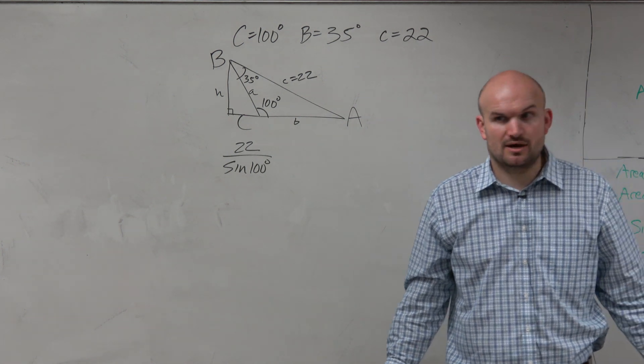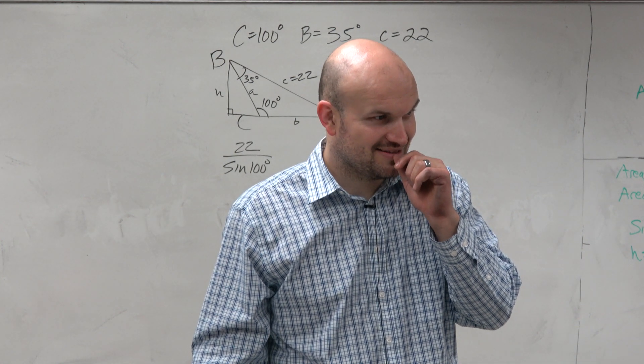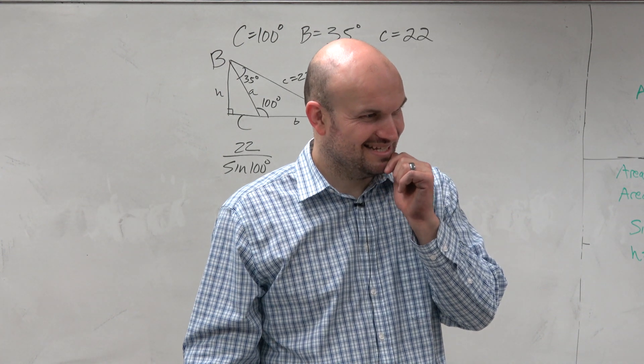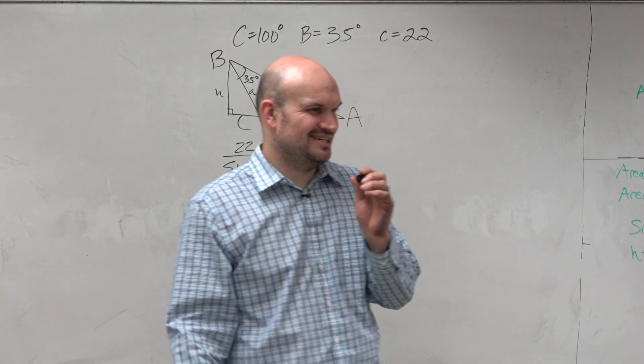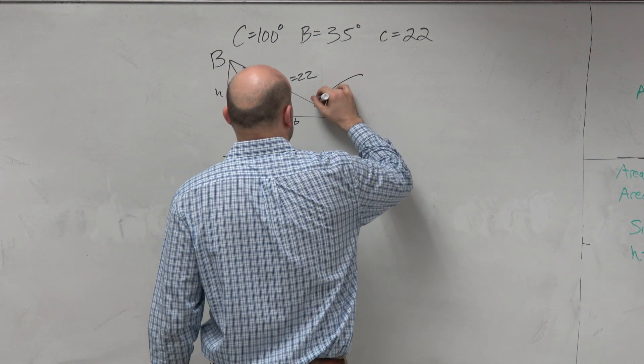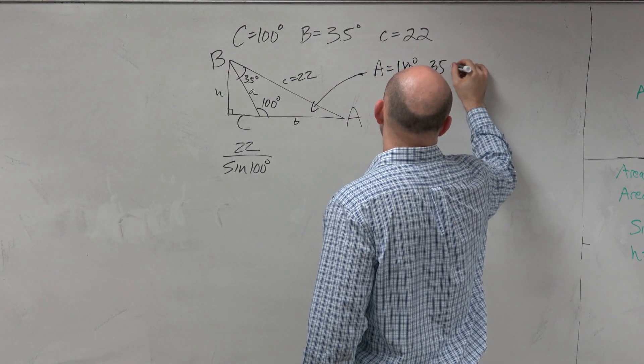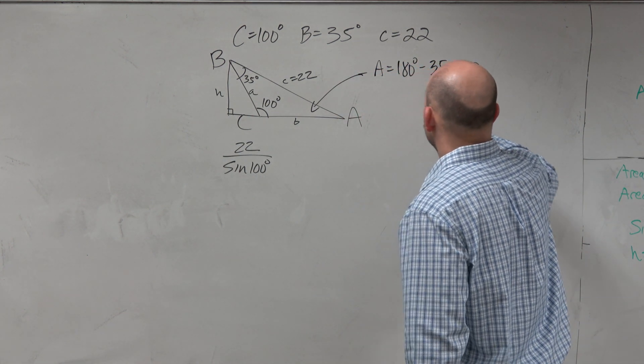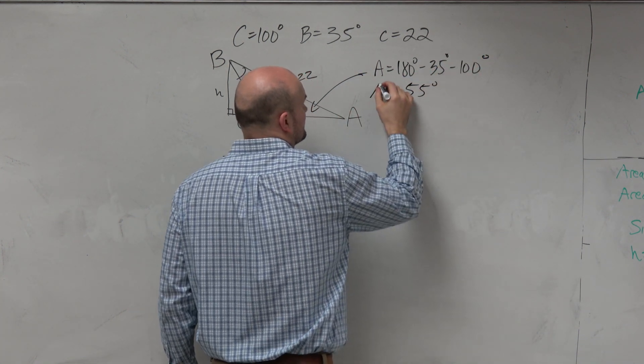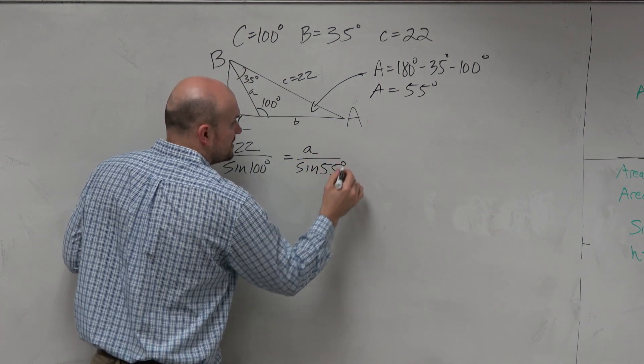So what am I going to do? Because I don't have angle a or side length a. How can I find it? Right, which is, do you remember what it's called? The interior angle sum theorem. Geometry, right? All angles add up to? All the angles in a triangle add up to 180. So a equals 180 degrees minus 35 minus 100, which is 55 degrees. So therefore, I can say little a is just equal to the sine of 55 degrees.